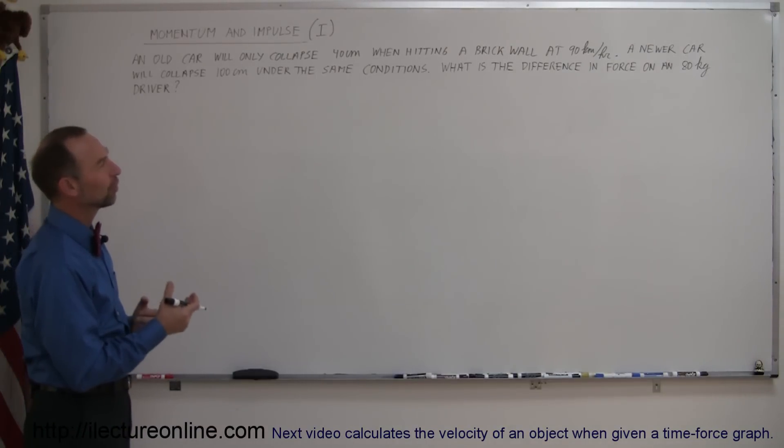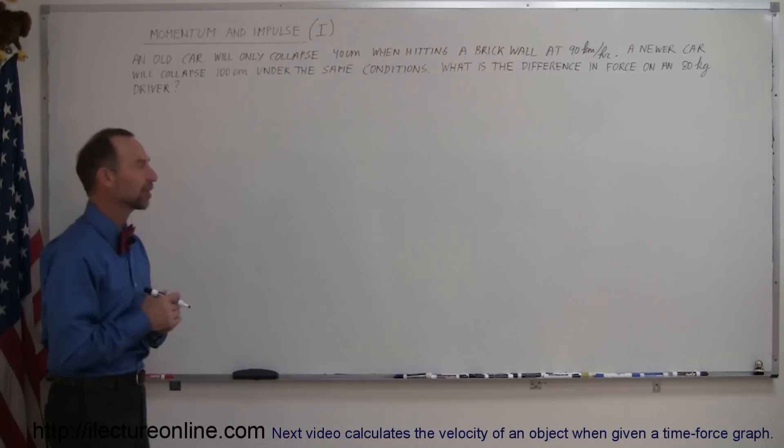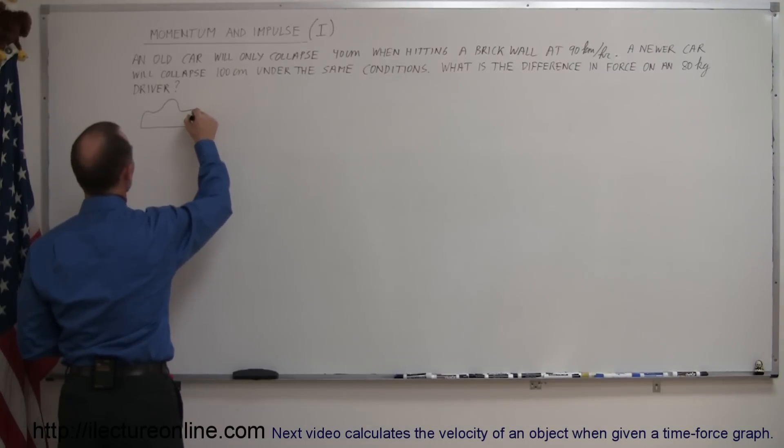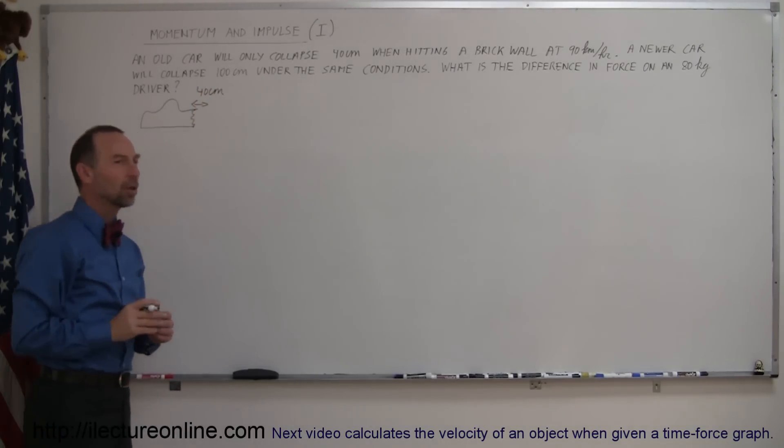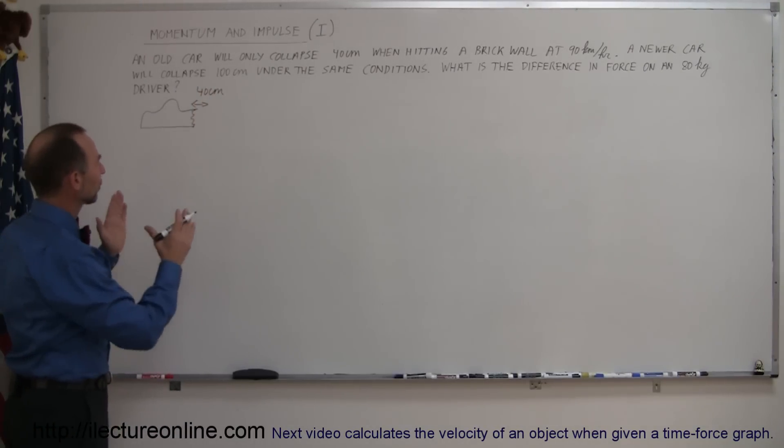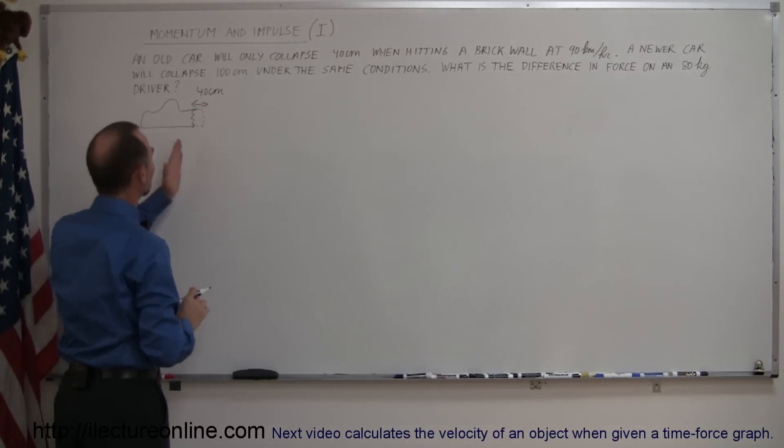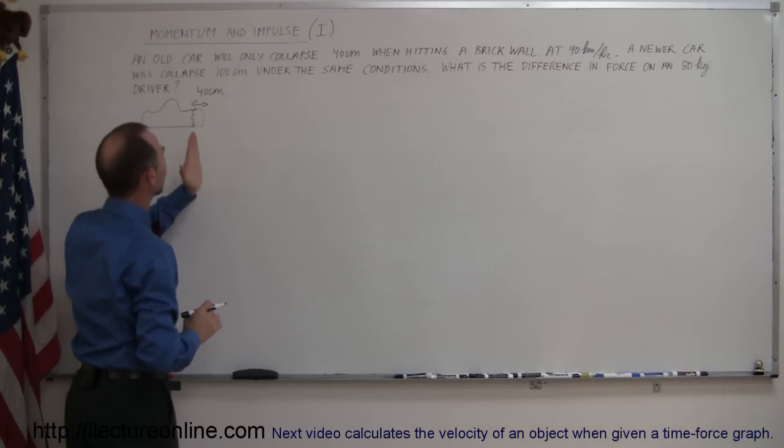So what is the difference in the force acting on an 80 kilogram driver? Let's try to figure this out. When an older car smashes into a brick wall, the front end will collapse a distance of about 40 centimeters. So how long did it take for that car to be crumpled up? If this was the original front end of the car and it collapsed 40 centimeters, how long did it take to cover that distance?